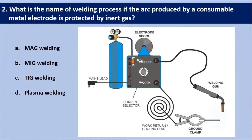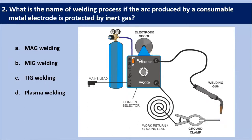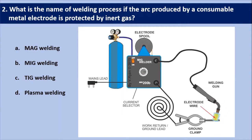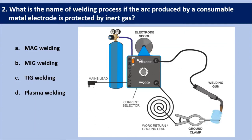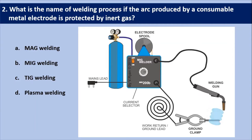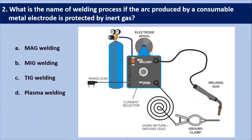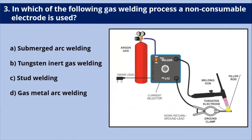Next question: what is the name of the welding process if the arc produced by a consumable metal electrode is protected by inert gas? In MIG welding — metal inert gas welding — the arc is formed between a continuous, automatically fed metallic consumable electrode and the welding job, in an atmosphere of inert gas. Hence it is called metal inert gas arc welding, or MIG welding.